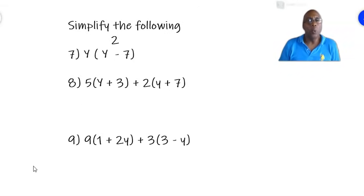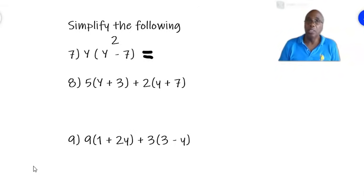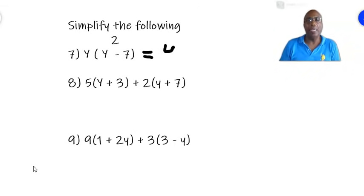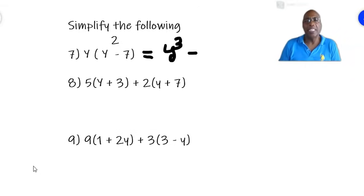Number 7 reads y times (y squared minus 7). We multiply first y times y squared. y times y squared is y cubed, because y squared is y times y, so you multiply y times y times y, which is y cubed. Then y times minus 7 — a plus times a minus is a minus — and y times 7 is 7y. We put the number first and then the letter, so not y7 but 7y. The answer is y cubed minus 7y.